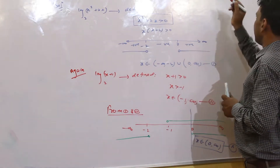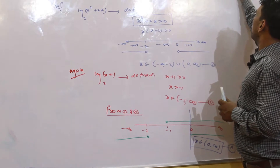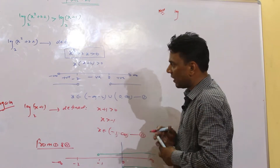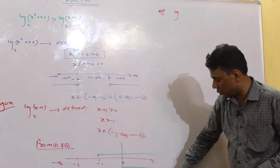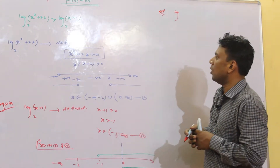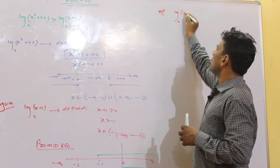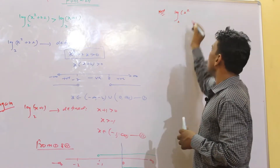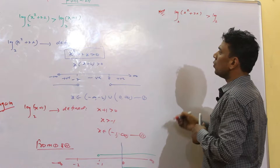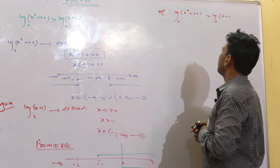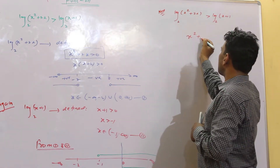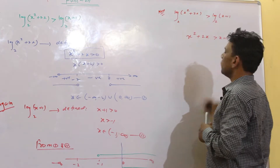Now for logarithmic inequality - दोनों log इस interval में define है। अब logarithmic inequality को deal करना है: log₂(x² + 2x) > log₂(x + 1). Base more than 1 है तो यहां पर हम लिख सकते है x² + 2x > x + 1 using properties.